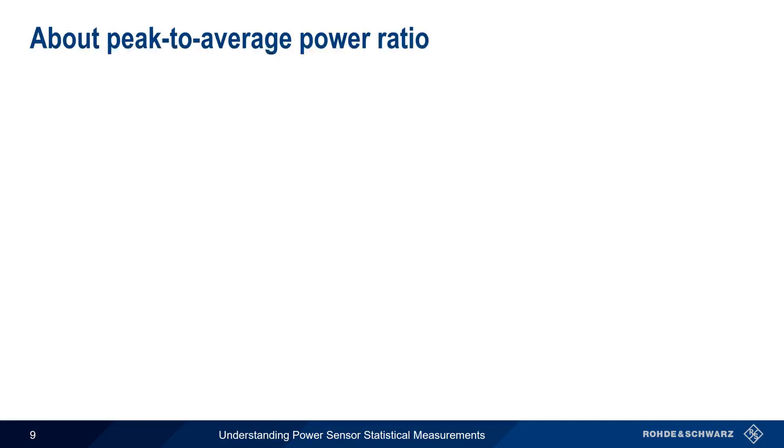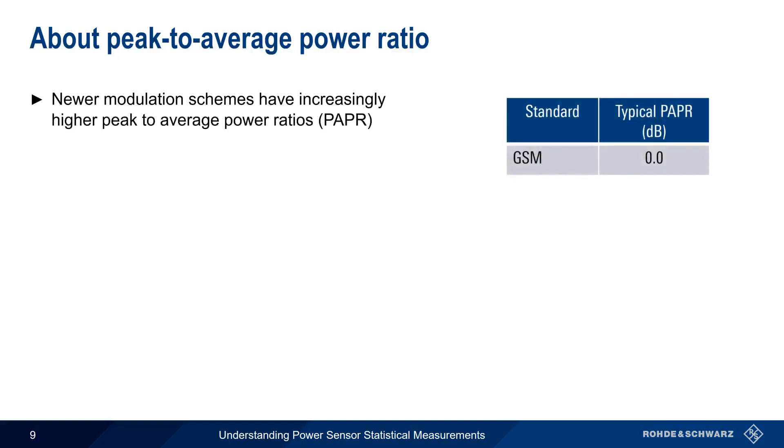Why is peak-to-average power ratio important? Over the last couple of decades, the peak-to-average power ratio of common modulation types has been steadily increasing. For example, GSM had a zero peak-to-average power ratio, but each new generation of cellular power or wireless technology has had an increase in the peak-to-average ratio.